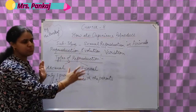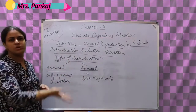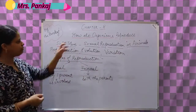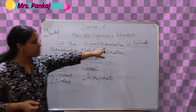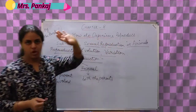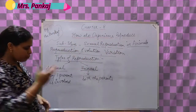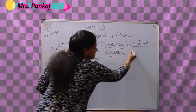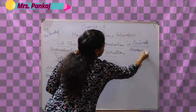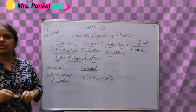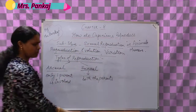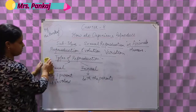So asexual reproduction and sexual reproduction are the two types of reproduction. These are the basic terms, or the most required knowledge, we should have before starting with our topic - sexual reproduction in animals, or more precisely we can say humans.